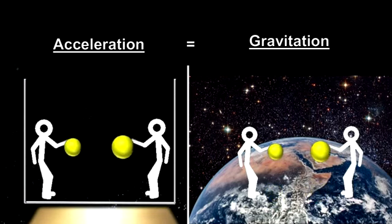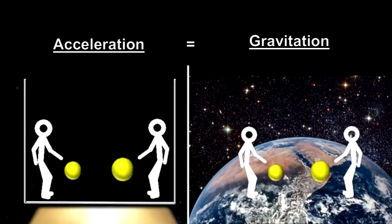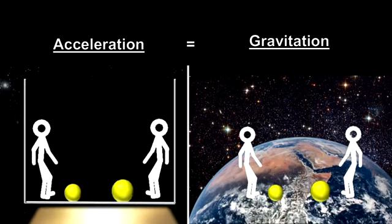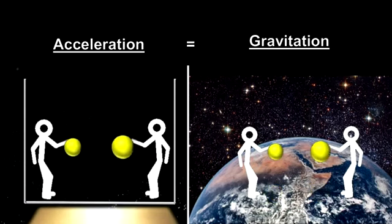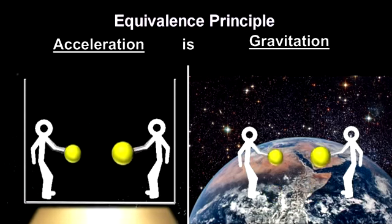Einstein felt that before you can declare two things equal, you need to demonstrate an equality in the real nature of the two concepts. In other words, we can only say they're equal after their real nature is found to be equal. His equivalence principle does just that.